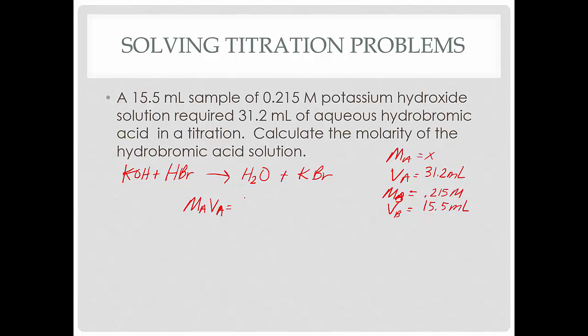I do not have to change them to liters because they're both in milliliters. I know that moles at the equivalence point, moles of acid equals the moles of the base. How do I find moles? It's molarity times the volume. This is what I do not know, 31.2. And I'm just plugging in what I do know, 0.215 times 15.5. And then you do your algebra. Divide both sides by 31.2. It's a 1.07 molar solution.